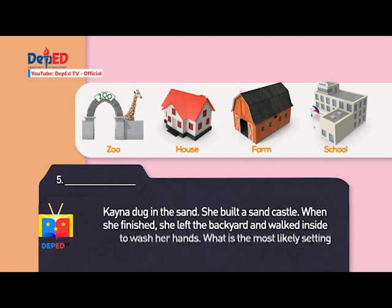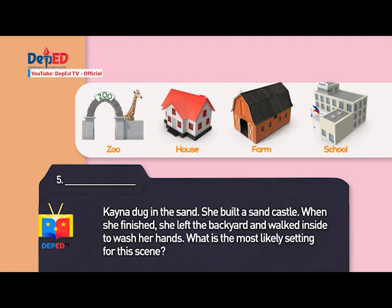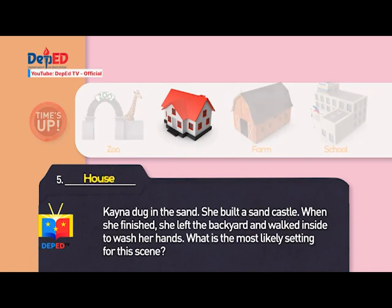Number five: Kena dug in the sand. She built a sand castle. When she finished, she left the backyard and walked inside to wash her hands. What is the most likely setting? Clues: A zoo. The house. A farm. A school. Answer: The house.